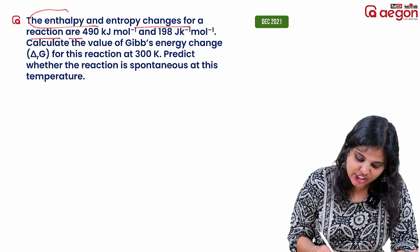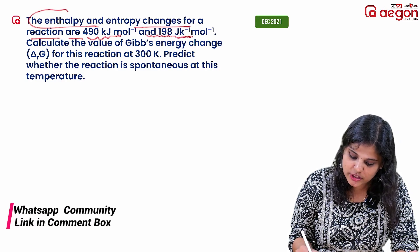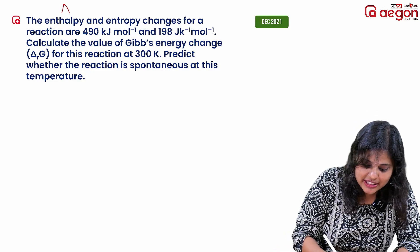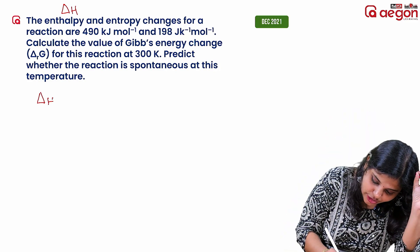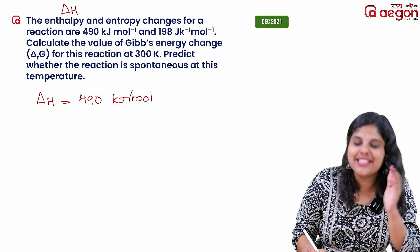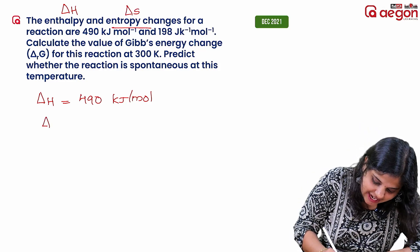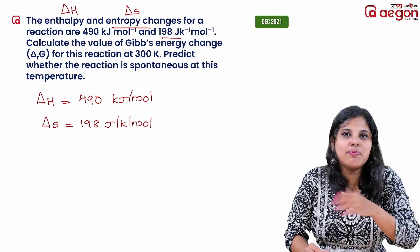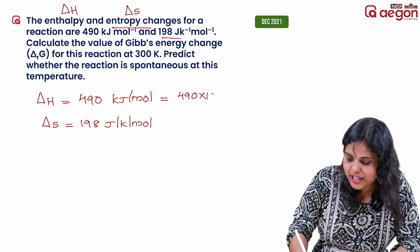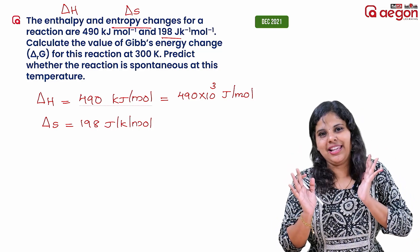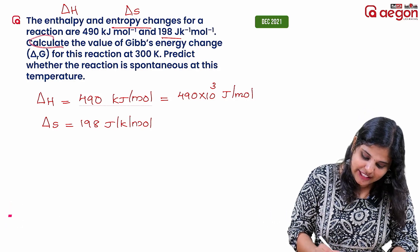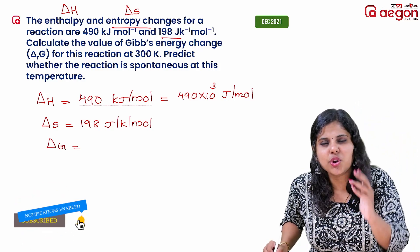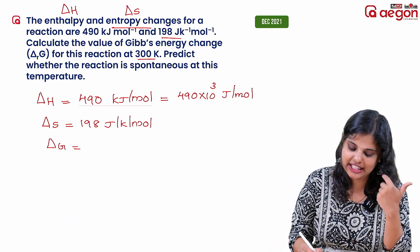The enthalpy and entropy changes for a reaction are 490 kJ per mole and 198 J per mole respectively. One chemical reaction — enthalpy change is delta H, entropy change is delta S. Delta H is 490 into 10 raised to 3 joules per mole. You can calculate the value of Gibbs energy change.